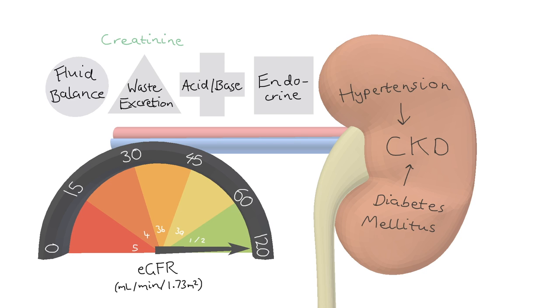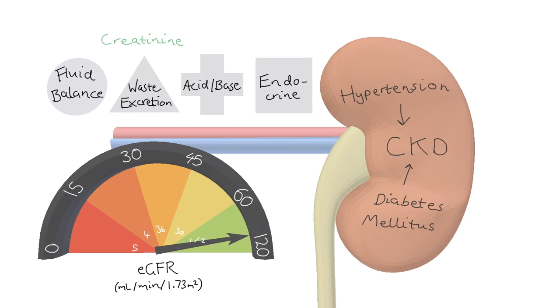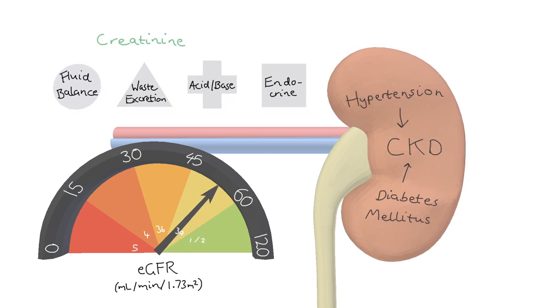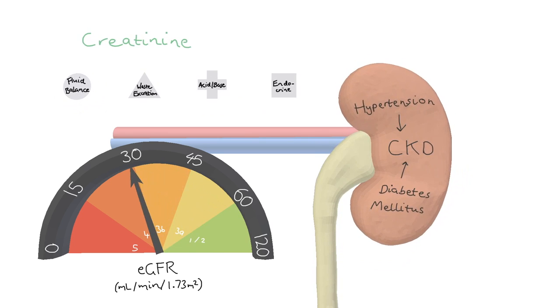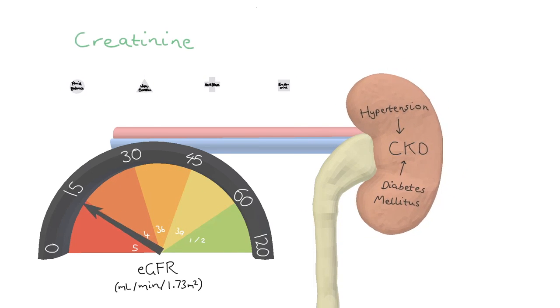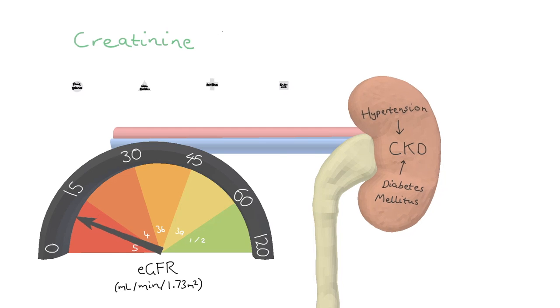The rate that your glomeruli can filter, your GFR, decreases as you age. They say over the age of 40 your GFR decreases at a rate of 1 mil per minute per year.